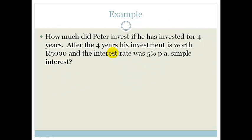Let's look at another example. This time it says, how much did Peter invest if he has invested for 4 years? After the 4 years, his investment is worth 5,000 Rand and the interest rate is 5% per annum simple interest. So the first thing that we need to do is write down our equation. So again, we have that A equals P bracket 1 plus IN. And the variables are A, P, I and N. So this time they're asking us, how much did Peter invest? In other words, they want to know what was Peter's principle. He invested it for 4 years and his interest rate was 5% per annum. So that becomes 5 divided by 100, which becomes 0.05. And what did he end up with? He ended up with a total of 5,000 Rand.